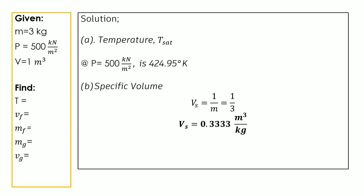For our first part, we need to find the temperature of the mixture. In this part we don't have to solve mathematically — we just need to use our steam table. Go to the saturated water table, find the pressure of 500 kilonewtons per square meter, and find its corresponding temperature. The saturated temperature of the substance is 424.95 degrees Kelvin.